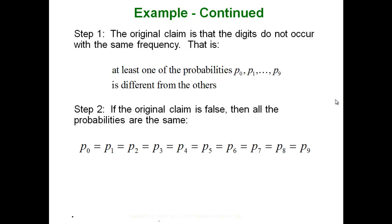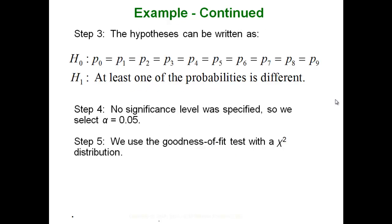The null hypothesis, the original claim is that the digits do not occur with the same frequency. That means at least one of them is different. And then the opposite of that is that they are all the same. So the original claim is that at least one of them is different. The opposite of that is that they are all the same. If we are going to put those into null alternatives the null is always the all the same version. The null is that all of the proportions are the same. And then the alternative is that at least one of them is different. They didn't specify a level of significance so we can select anything we want. We are going to go with the typical .05. And then of course we know that because we are looking for multiple p's, multiple proportions lining up that we are going to use the chi-square distribution.